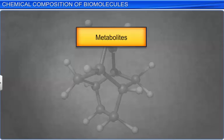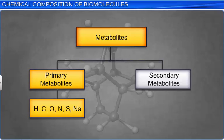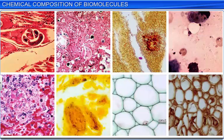Metabolites are classified as primary and secondary metabolites. Compounds such as hydrogen, carbon, oxygen, nitrogen, sulfur, and sodium, which are involved in normal growth, development, and reproduction, are called primary metabolites. They are found in animal tissues.